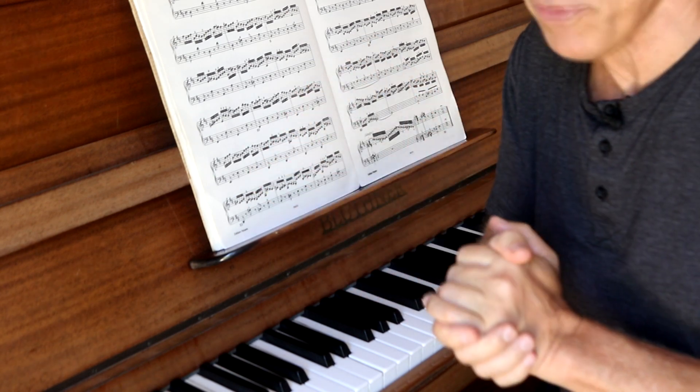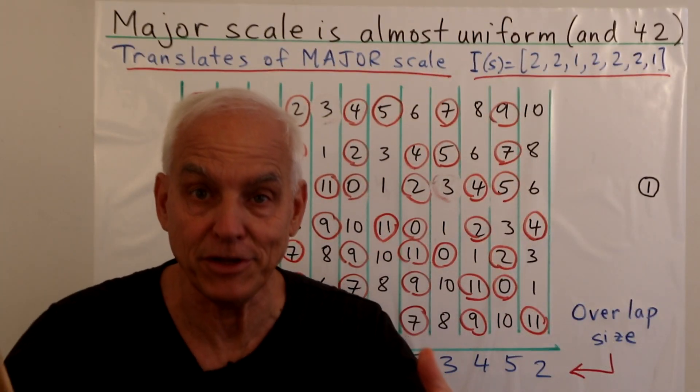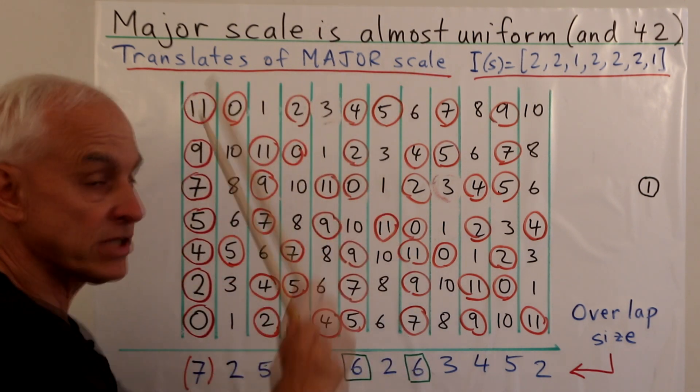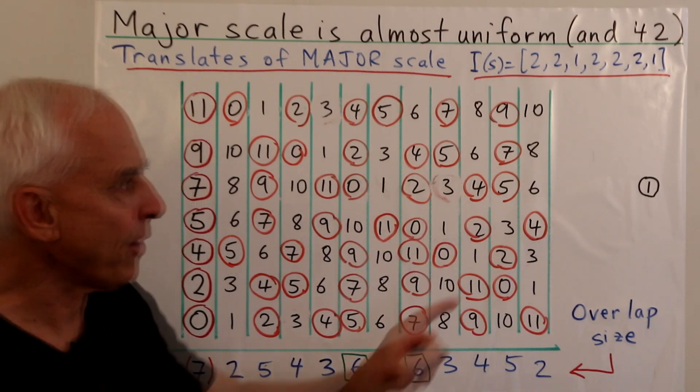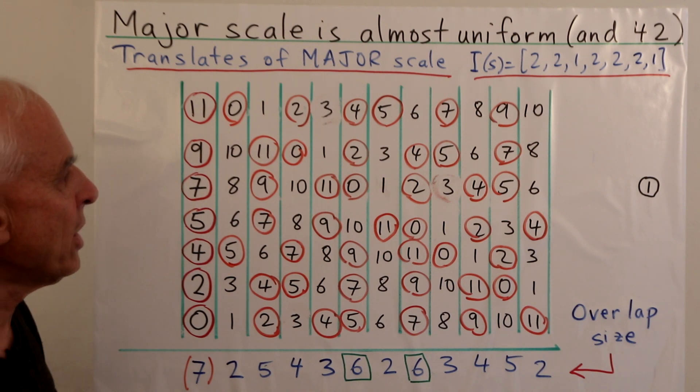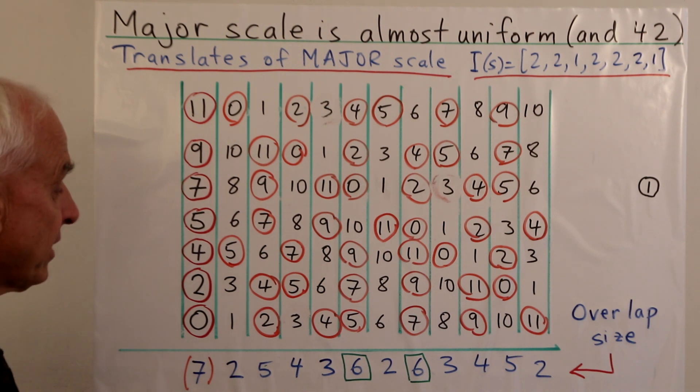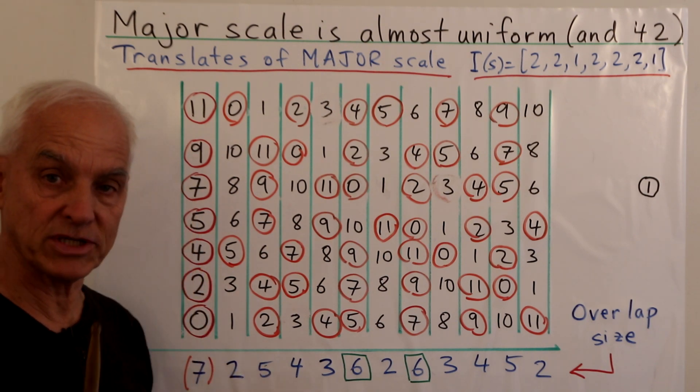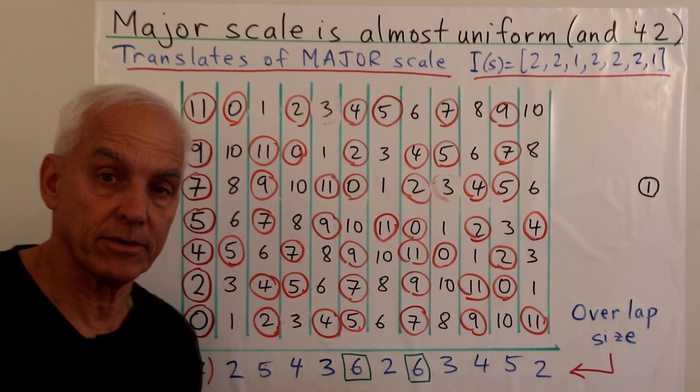How common is that kind of property? So now I want to analyze this phenomena a little bit more mathematically using our numerical notation for tones. So we're looking at the major scale. I want to demonstrate to you that it's almost uniform, and also point out that the number 42 is kind of curiously associated with this story. So the interval sequence for the major scale, 2, 2, 1, 2, 2, 2, 1, we're very familiar with that.